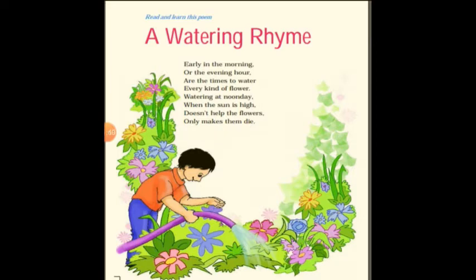The first stanza reads: 'Early in the morning or the evening hour are the times to water every kind of flower. Watering at noonday — noon means middle of the day when the sun is high — doesn't help the flowers, only makes them die.' The poet is saying that the best time to water plants is early morning or evening when the air temperature is low. Do not water plants at noon because evaporation is very high at midday, and the plant will not get enough water — it will die.